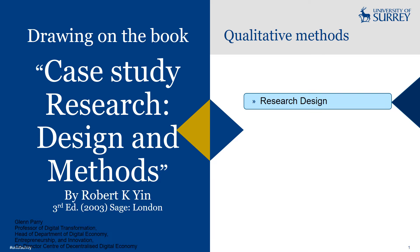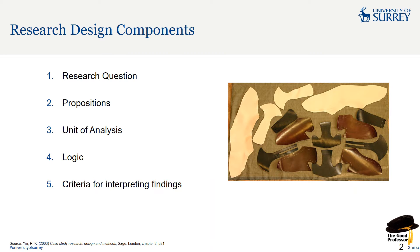Now let's consider case study research design. When we're designing research we've got a certain number of components to consider: the research question, the propositions, the unit of analysis, the logic and the criteria we're going to use for interpreting our findings. These are our five basic building blocks.